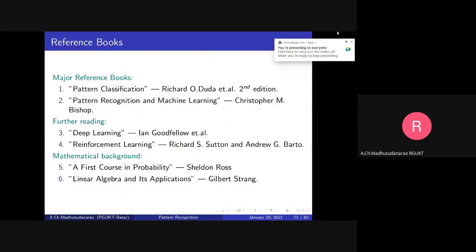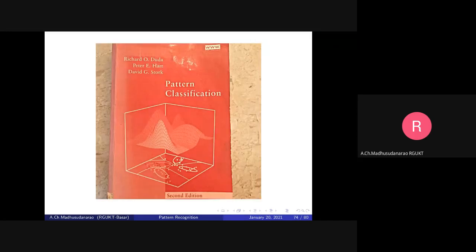Here are the references for this particular course — the pattern recognition course. The major reference is this book. If you want you can buy this book; I think it will cost you around 600 rupees. It will be very much helpful for you. Mostly I will try to follow this textbook only: Pattern Classification by Duda and Hart.